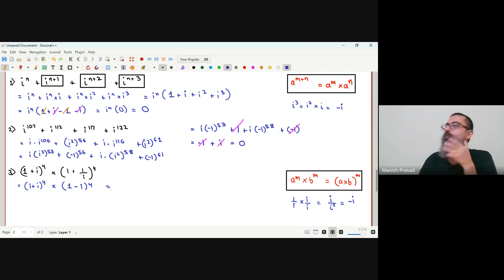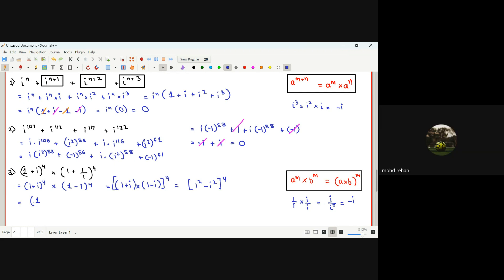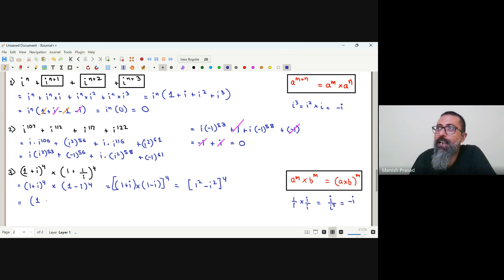If we use class 9-12 formula, a to the power of n into b to the power of n equals to a multiplied by b to the power of n. So 1 plus i into 1 minus i, the whole thing to the power of 4. Ab andar ho gaya a plus b, a minus b, that is a square minus b square to the power of 4. One ka square kya hota hai? One. I ka square kya hota hai? Minus one. Minus one, ek minus bahar hai, so minus into minus.